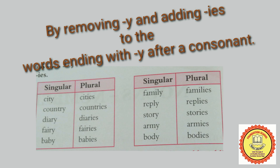The next rule is: remove Y and add IES for words ending with Y after a consonant. That is, agar kisi shabdo ke anta mein Y hai aur uske pehle koi consonant hai, then we remove Y and add IES. For example: city becomes cities, family becomes families, story becomes stories, and many more.